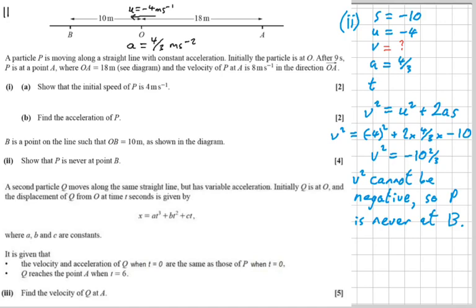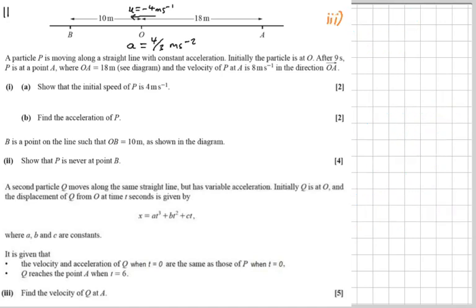By the way, if you'd decided to try and find t instead, you'd have been using s equals ut plus a half a t squared, which will have led you to a quadratic in t, and it would have been a quadratic with no solutions, i.e. its discriminant would have been negative, and you'd have had to show that.